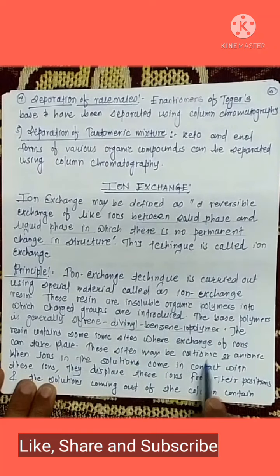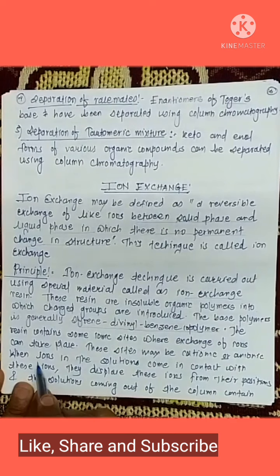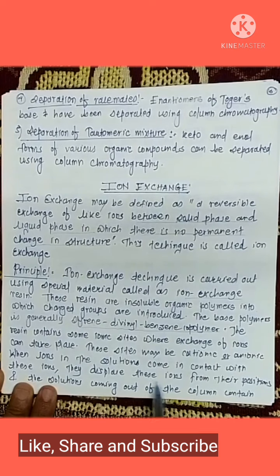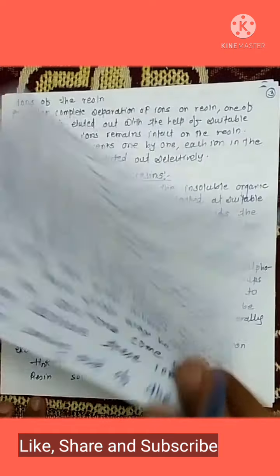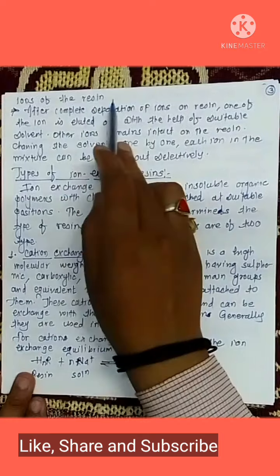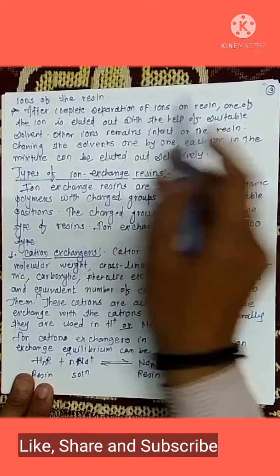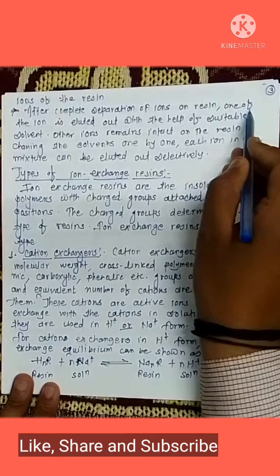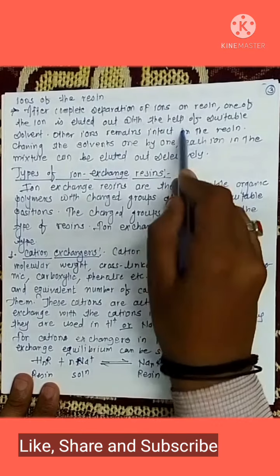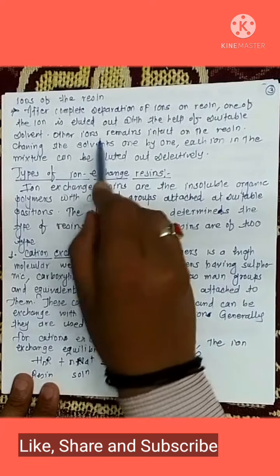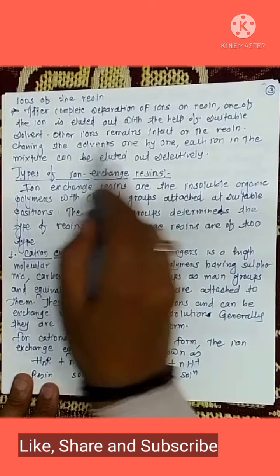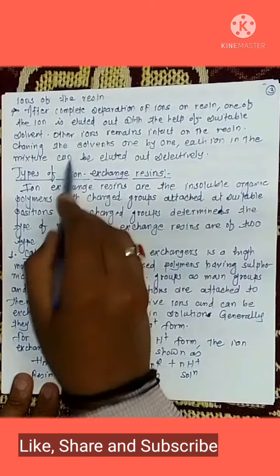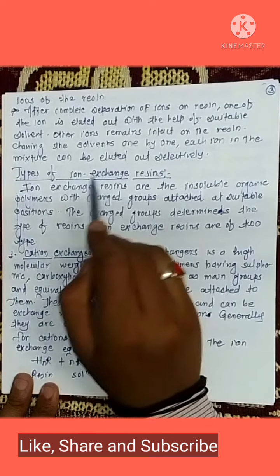These sites may be cationic or anionic. When ions in the solution come in contact with these ions, they displace the ions from their position and the solution coming out of the column contains ions of the resin. After complete separation of ions on the resin, one ion is eluted out with the help of a suitable solvent, while other ions remain intact on the resin. By changing the solvent one by one, each ion in the mixture can be eluted out selectively.